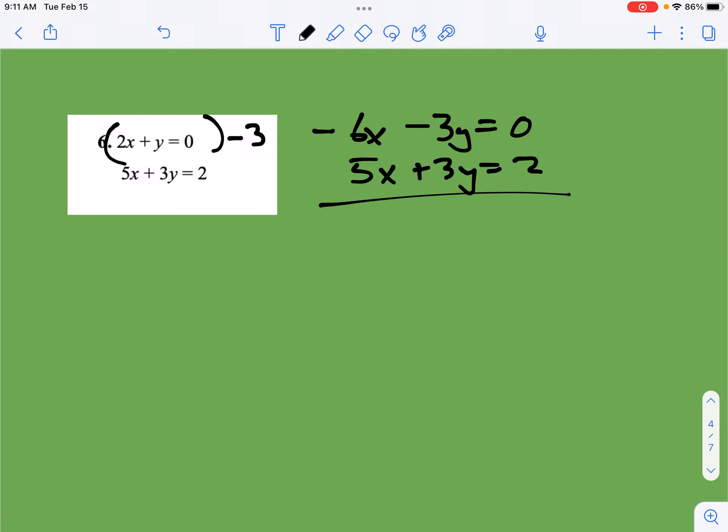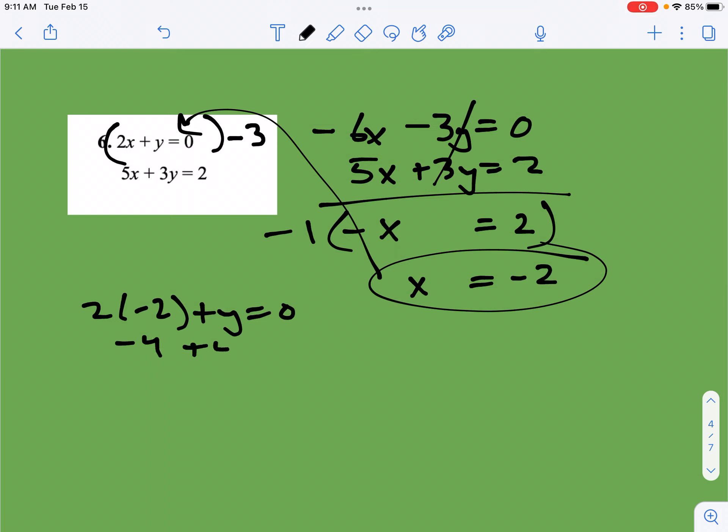And now I can just add these up. So I'm going to get negative x or negative 1x, whatever you want to call it. I call it negative x. Equals 2. So multiply both sides by negative 1 to tidy that up. x equals negative 2. So let's put this back in the top, the original top equation. So 2 times negative 2 plus y equals 0. You get negative 4 plus y equals 0, which means that if I add 4 to both sides, I get y is equal to 4.